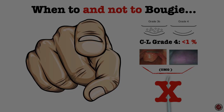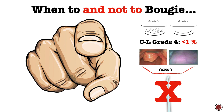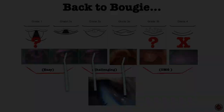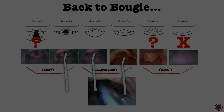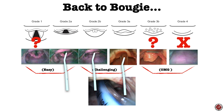Cormack-Lehane grade 4 views are very uncommon — less than 1%. If your rate is higher than that, something else may be going on. One common scenario mislabeled as grade 4 is actually the operator looking into the esophagus. Grade 4 is not advisable for bougie use given no anatomical reference. To summarize: evidence supports bougie use for grade 1s to maintain skill, 2As, 2Bs, and 3As. There is little literature support for 3B views, and I would not use it for grade 4.